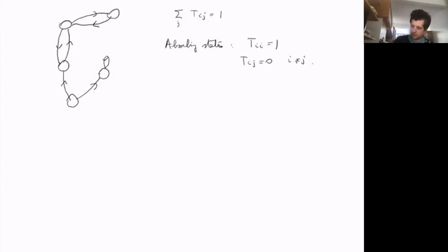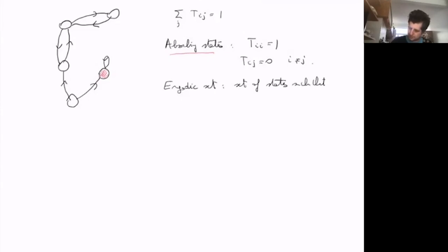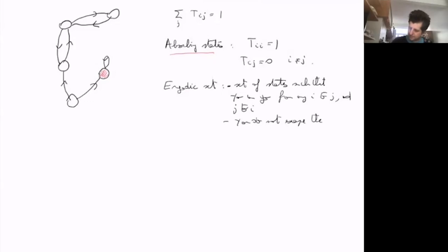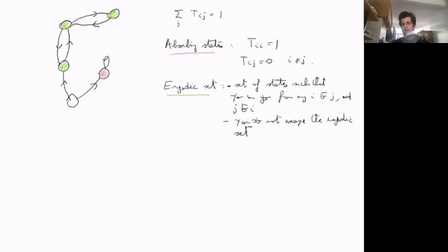An ergodic set is a set of nodes such that you can go from any state i to j and from any j to i, and you cannot escape the ergodic set — once inside, you stay there forever. An example would be three nodes forming a closed group: once in one of those nodes, you remain there and can reach any node within the set in a finite number of steps.